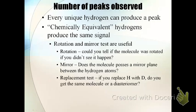The next thing to tackle is figuring out the relationship between the number of peaks in an NMR spectrum and the structure of a compound. The concept we work with is chemically equivalent hydrogens. If you have chemically equivalent hydrogens, they produce the same signal.